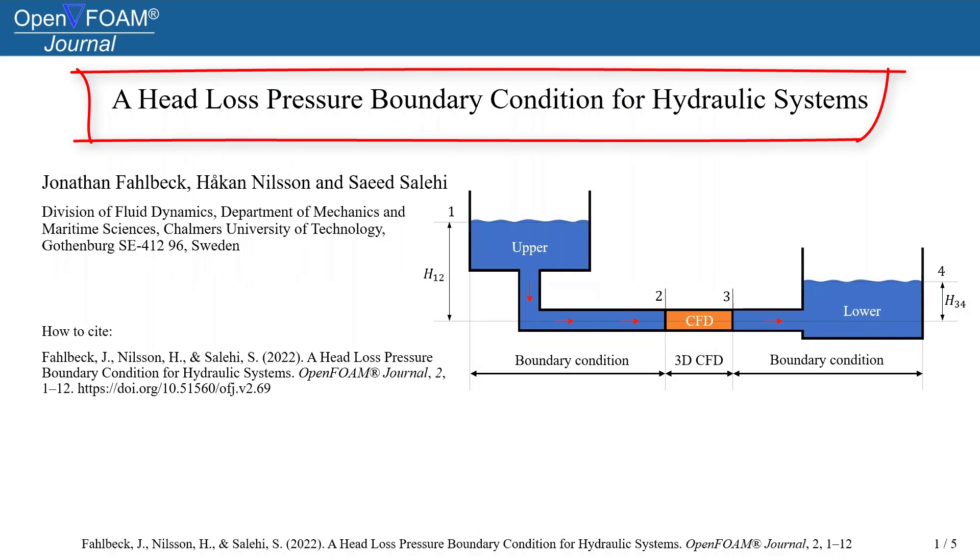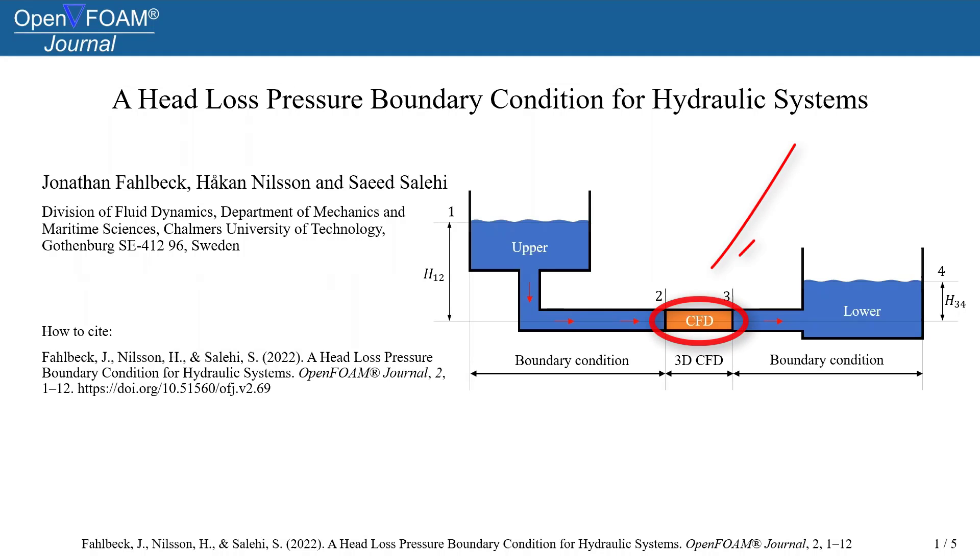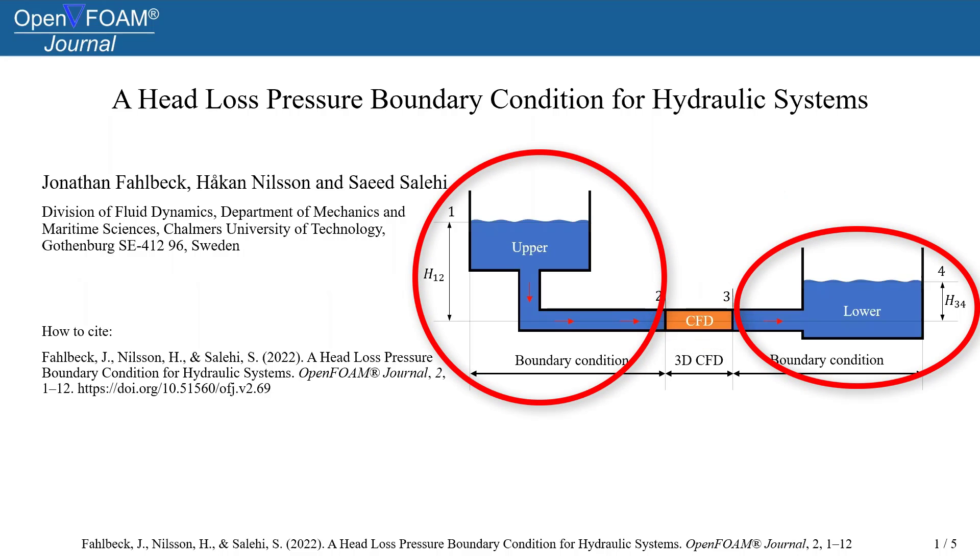A head loss pressure boundary condition for hydraulic systems is a pressure boundary condition that allows you to study a component in detail while also considering a larger hydraulic system which the component is in reality part of.